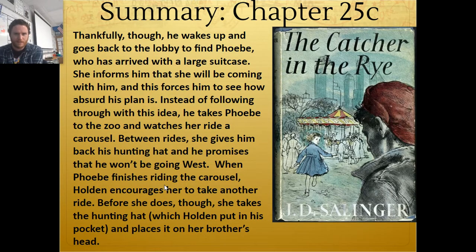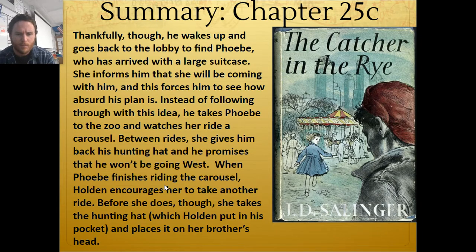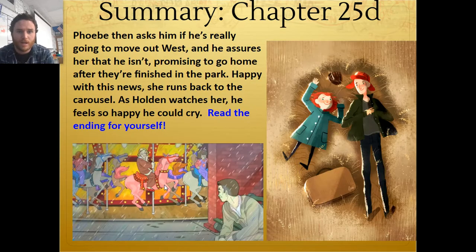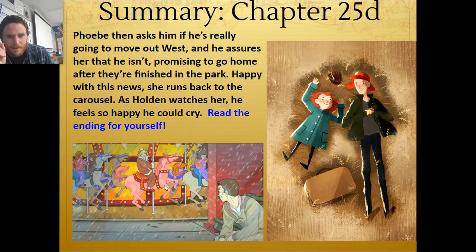Thankfully, he goes back to the lobby to find Phoebe, who has arrived with a large suitcase. She informs him that she'll be coming with him, and this forces him to see how absurd his plan is. So instead of following through with this idea, he takes Phoebe to the zoo and watches her ride a carousel. Between rides, she gives him back his hunting hat, and he promises that he won't be going out west. When Phoebe finishes riding the carousel, Holden encourages her to take another ride. Before she does, she takes the hunting hat, which Holden put in his pocket, and places it on her brother's head. He assures her he isn't going to move out west, promising to go home after they're finished in the park. Happy with this news, she runs back to the carousel. As Holden watches her, he feels so happy he could cry. It's raining.